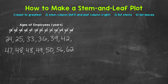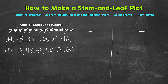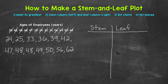Now that everything is in order, we need to create the stem and leaf plot. So we're going to make the stem column and leaf column. Let's start with a vertical line and then a horizontal line here. The stem column is on the left and then the leaf column is on the right. Taking a look at the data, we have two-digit numbers for this example, and they range from 24 to 62.